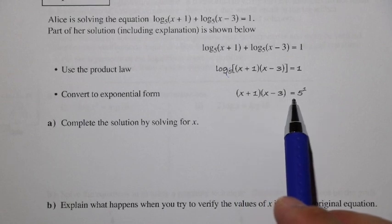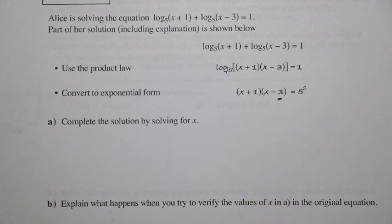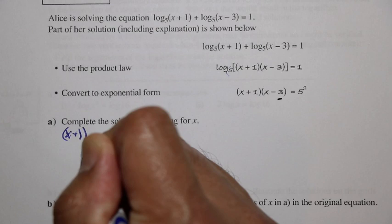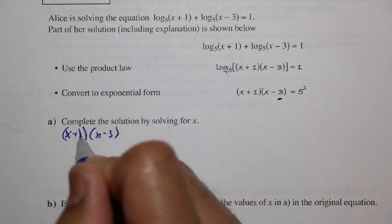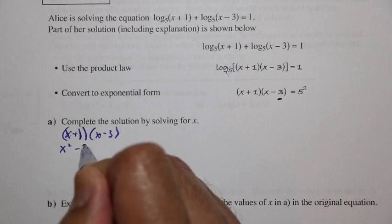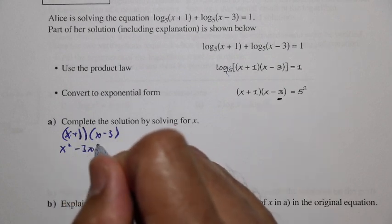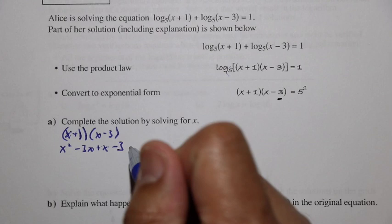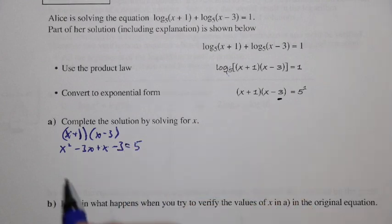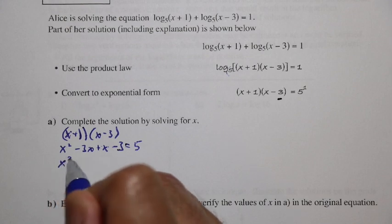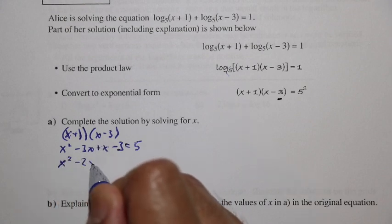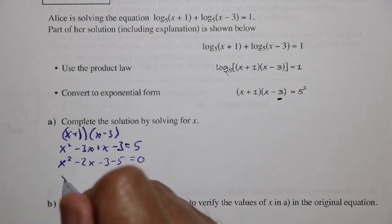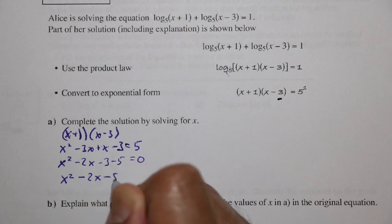We continue solving by multiplying the binomials: (x plus 1) times (x minus 3). We get x squared minus 3x plus x minus 3, which equals 5. Collecting like terms gives us x squared minus 2x minus 3 minus 5 equals 0, so x squared minus 2x minus 8 equals 0.